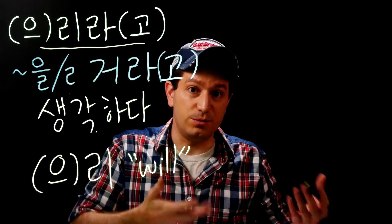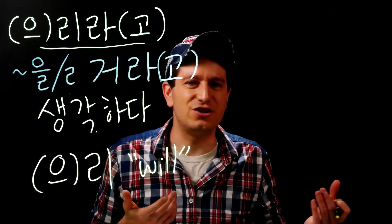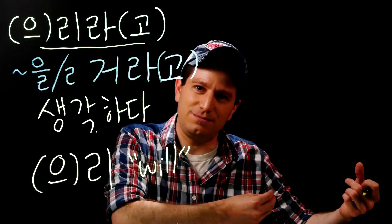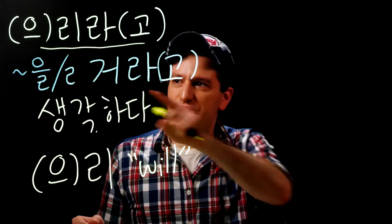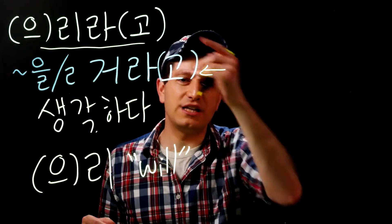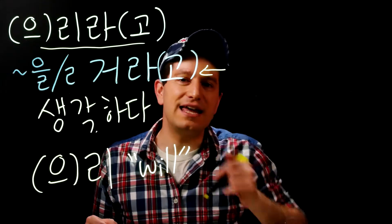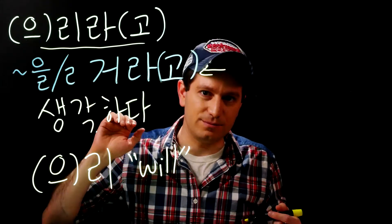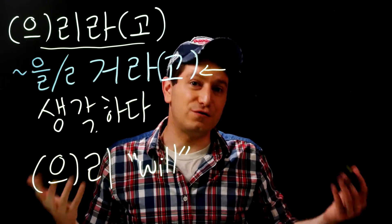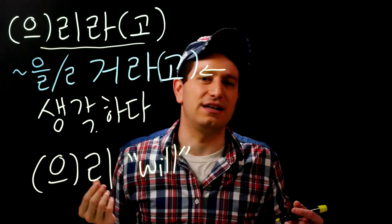For example, the verb 믿다 (to believe), 생각하다 (to think), 마음 먹다 (to decide to do something), or even 말하다 (to say that you're going to do something). Just like this form, you have the option of using it together with those verbs, or you can leave them off and just end a sentence with this form. Without a verb, you can think of it as kind of just like the regular future tense — saying something will happen, or someone will do something.